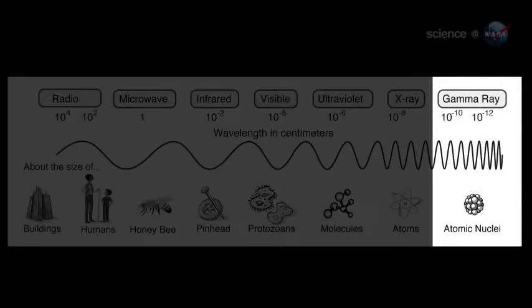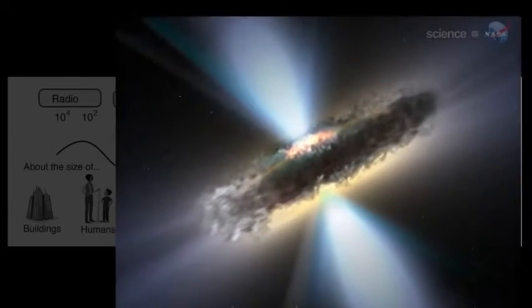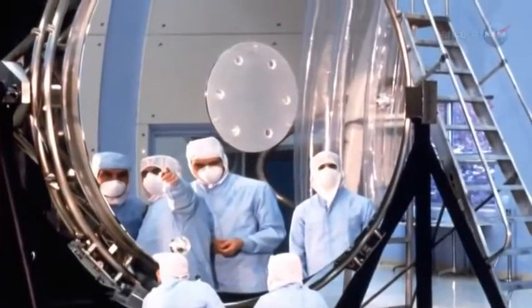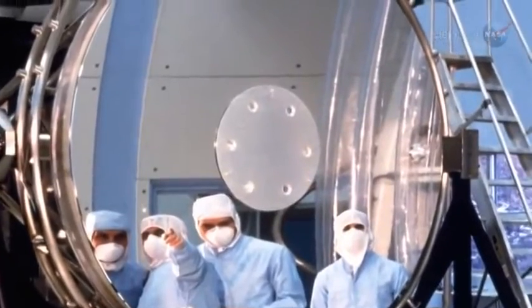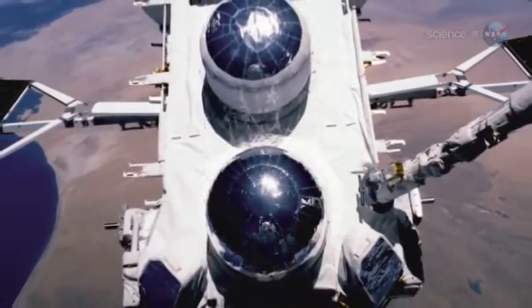Gamma rays are by their very nature heralds of great energy and violence. They are a super energetic form of light produced by sources such as black holes and massive exploding stars. Gamma rays are so energetic that ordinary lenses and mirrors do not work. As a result, gamma-ray telescopes can't always get a sharp enough focus to determine exactly where the sources are.